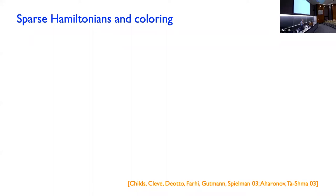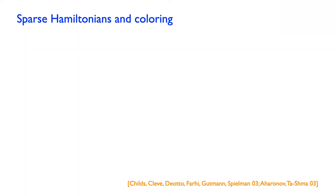Welcome back to the second half of this tutorial on quantum digital quantum simulation algorithms. Before the break, we were talking about product formula simulations. What I would like to do now is just talk briefly about how we can use these simulations to simulate sparse Hamiltonians — this kind of more general model of efficiently simulatable Hamiltonians. And then we'll move on to talk about post-Trotter simulation methods and a few other things.